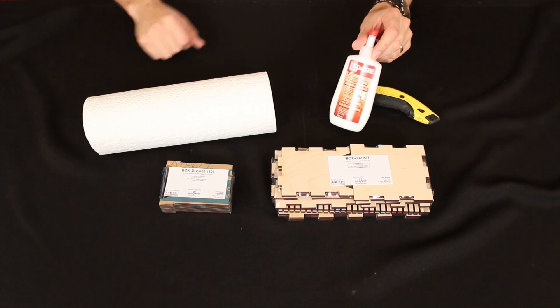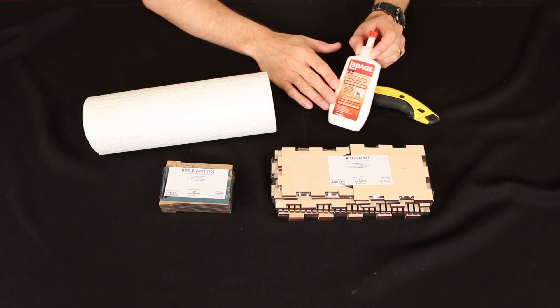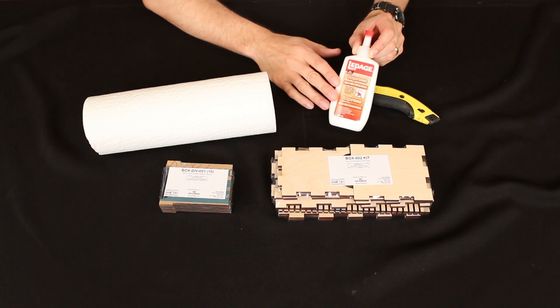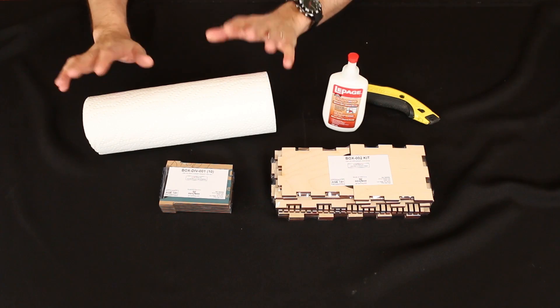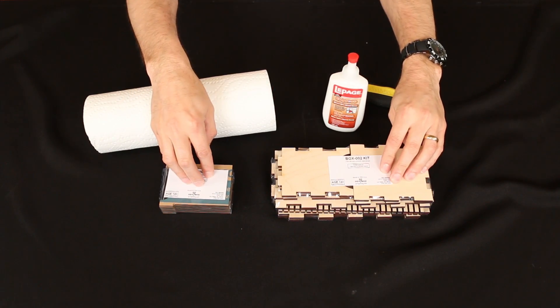So what I've got here is some LePage Express quick-drying wood glue. Any good quality wood glue should do the job. This is the one that I prefer. I also have some paper towel here to clean up any messes and, of course, the product, which is in shrink wrap.